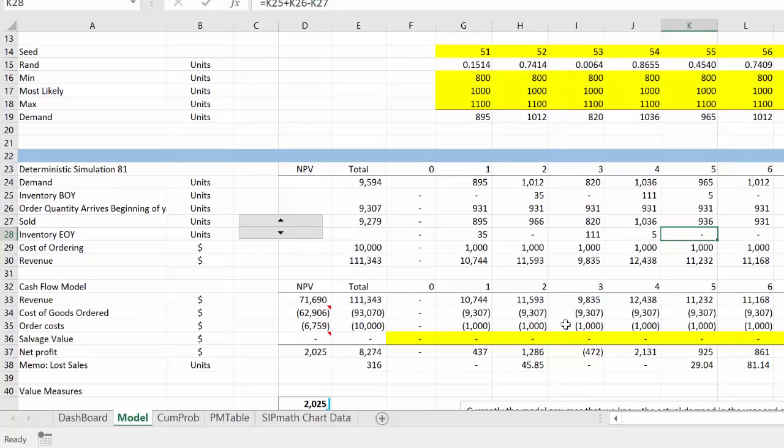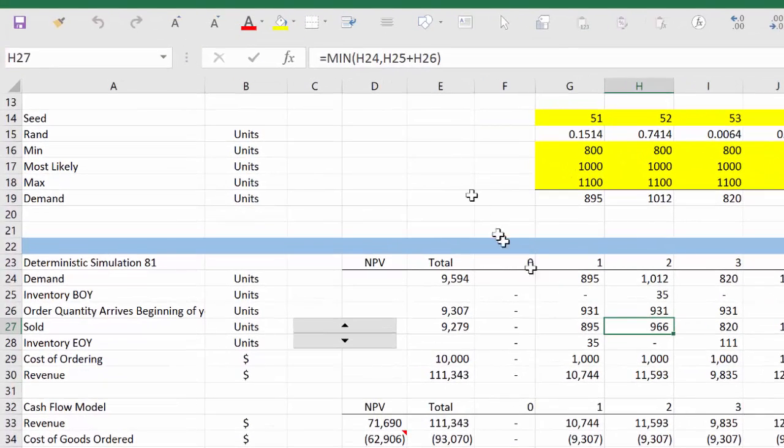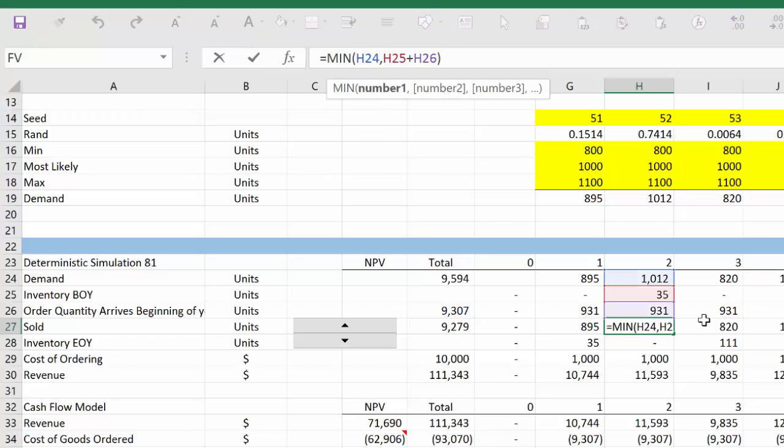I can then calculate my cash flow by talking about the revenue. And the revenue is how many units did I sell. Here's my sold line. This is really important. You see, it's the minimum of my demand and how many units I have on hand. So I had 35 left over from year one, plus I ordered another 931. So in this particular case, I could only sell 966. So there was some lost sales here. We do that for every year.